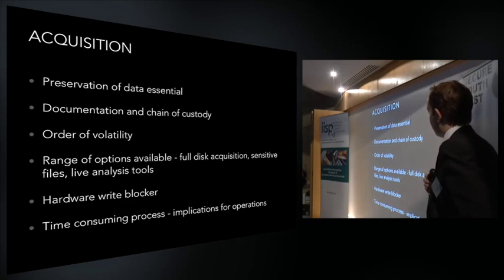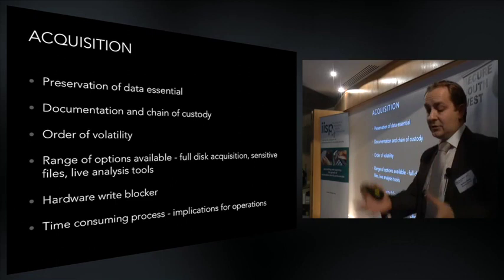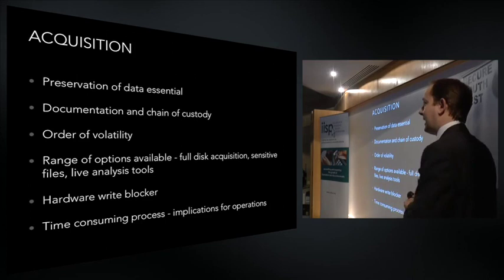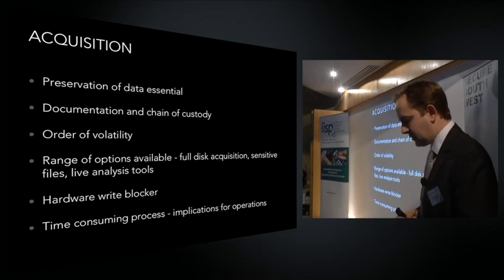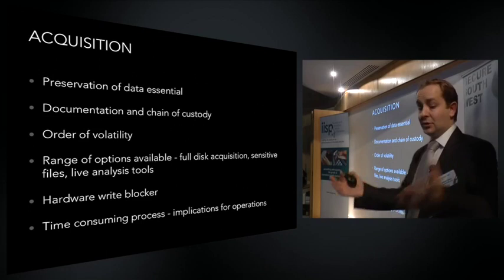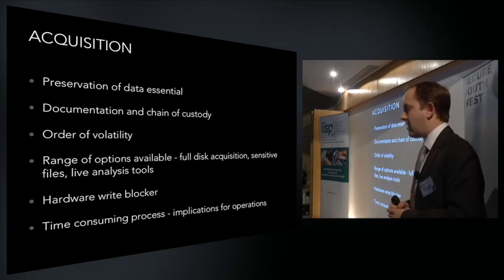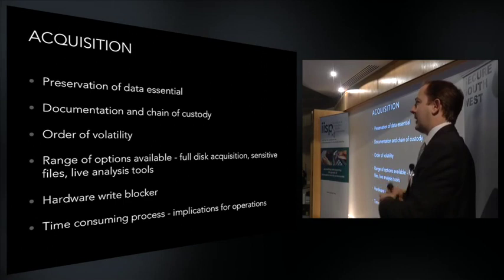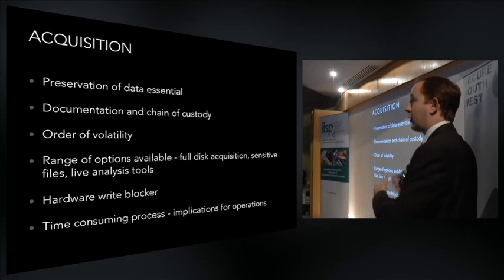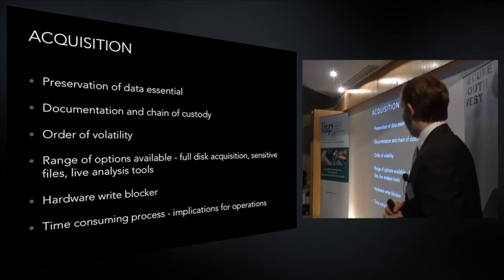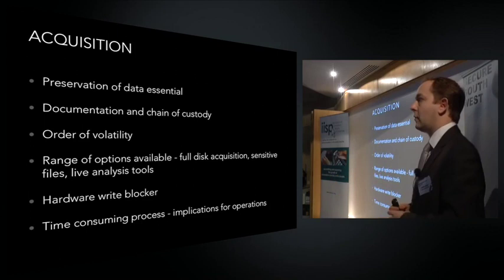With acquisition, there's also something called the order of volatility to consider. This is the problem that data on the computer itself changes all of the time. When you acquire that data, you need to give some thought to what you acquire first. Ideally we don't want to change any data, but in reality that's almost impossible — as soon as a computer is running, thousands of bits are changing continuously. Typically, we grab the RAM contents first, then analyse network protocols that are open, IPs that are talking, presence of any botnets, and then finally acquire the hard drive itself — that's the least volatile memory location.